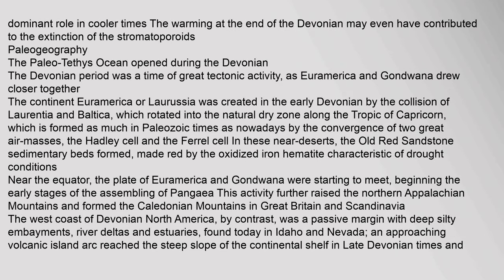The warming at the end of the Devonian may even have contributed to the extinction of the stromatoporoids. The Devonian period was a time of great tectonic activity, as Euramerica and Gondwana drew closer together. The continent Euramerica, or LaRussia, was created in the early Devonian by the collision of Laurentia and Baltica, which rotated into the natural dry zone along the Tropic of Capricorn, formed by the convergence of the Hadley cell and the Ferrell cell. In these near-deserts, the Old Red Sandstone sedimentary beds formed, made red by the oxidized iron hematite, characteristic of drought conditions.